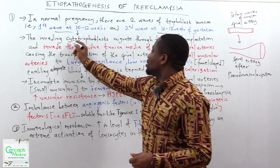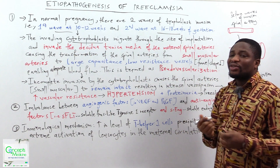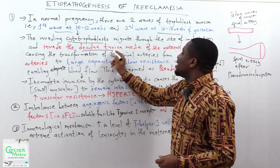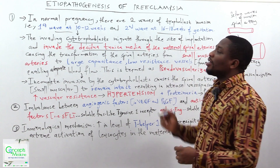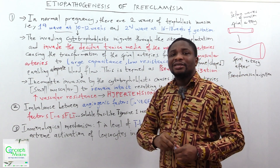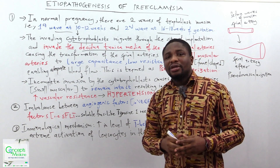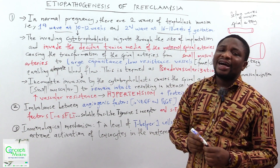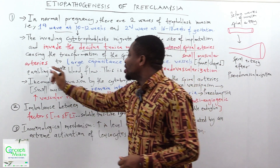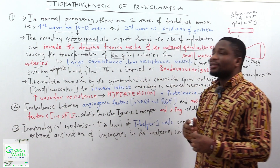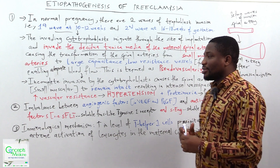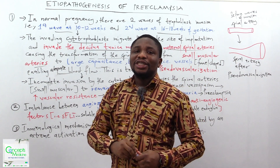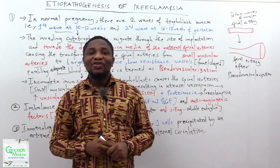When that happens, the invading cytotrophoblasts migrate through the site of implantation and invade the decidual tunica media of the maternal spiral arteries, replacing their endothelium. This causes the transformation of the spiral arteries from small muscular arteries to large capacitance, low resistance blood vessels, enabling adequate blood flow. That process is what we call pseudo-vascularization.